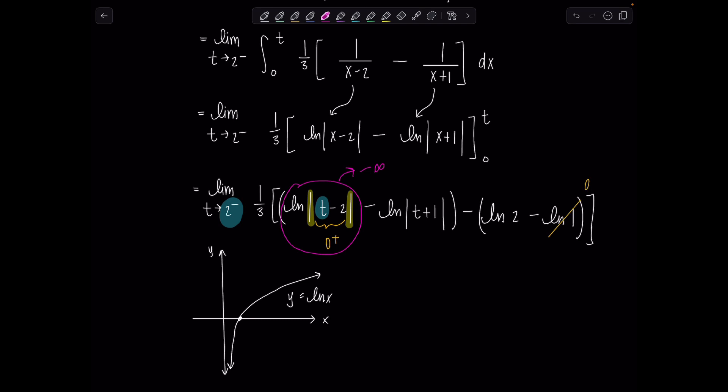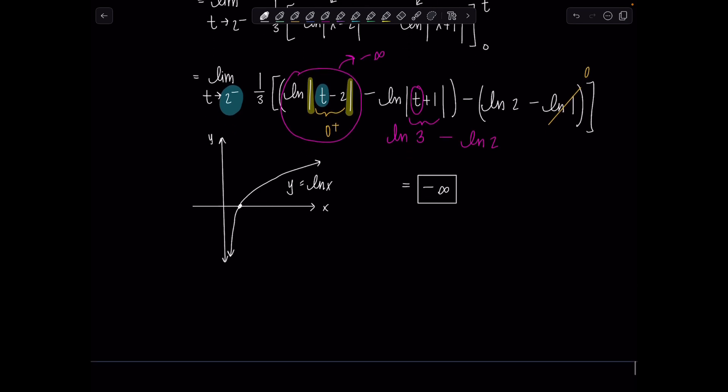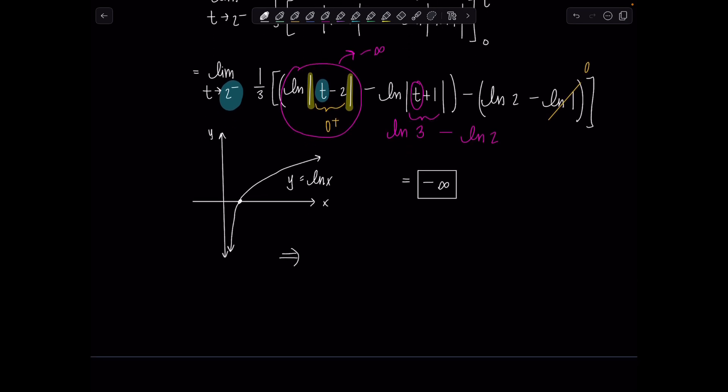Natural log of x is approaching negative infinity. So this whole term right here is going to negative infinity. What about the rest of the stuff? t is approaching 2 from the left. If I just plug in 2, this is going to be 3 in here. ln of 3 is just a number. And then I have minus ln of 2, and then that was just 0. So we've got negative infinity minus some constants times the third. But none of that's going to affect the fact that overall, this limit is approaching negative infinity. So that's our final result.